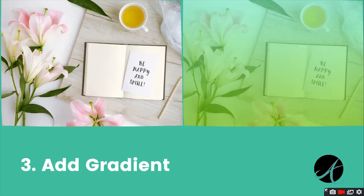The third point is to add a gradient. You can add a gradient to your stock image. As you can see on the right image, I've added a soft yellow gradient on top of the image and I can write a quote, some text, or something inspirational on this. The possibilities are endless.